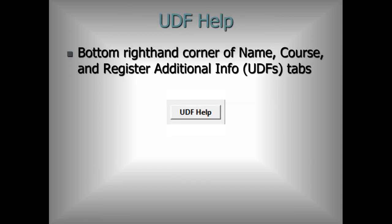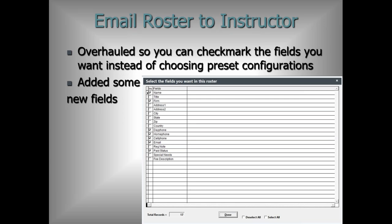Speaking of help — in the bottom right corner of Name, Course, and Register additional info tabs, there's now a UDF help button that takes you right out to the help guide. You can hover over the different fields and see the field names if you're working on a report or need field names for other reasons, all with a single click without having to search through help.